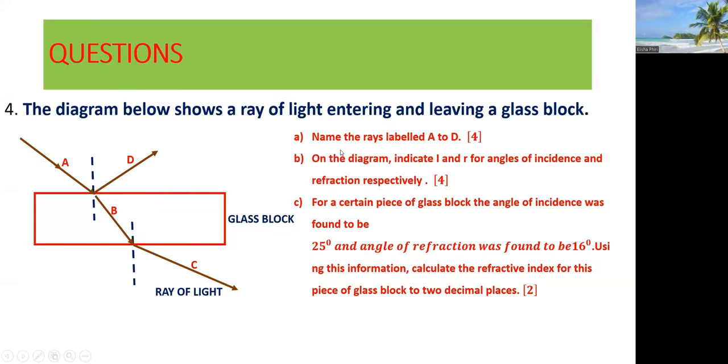Let's take a look at this problem that has to do with light. It's a physics problem. Let's see how you can solve this one. The diagram below shows a ray of light entering and leaving a glass block. Name the rays labeled A to D.